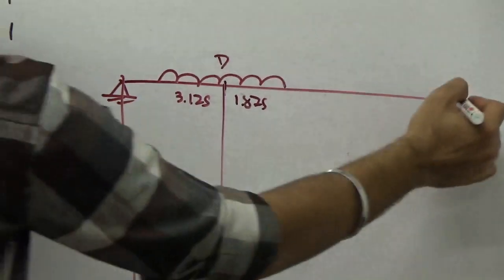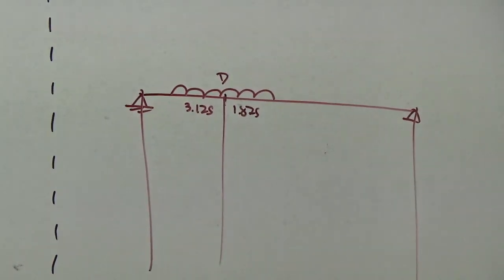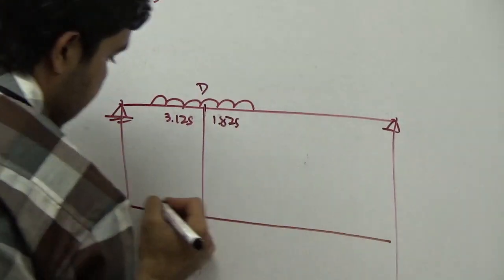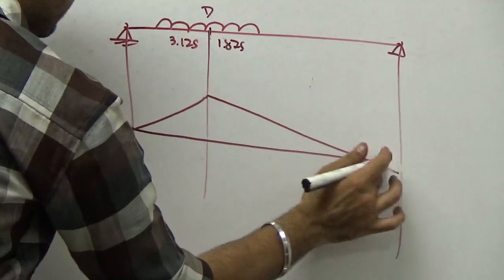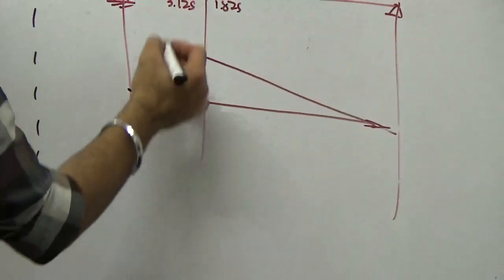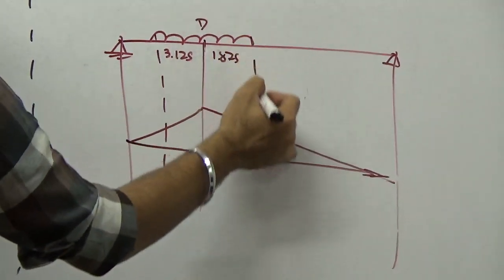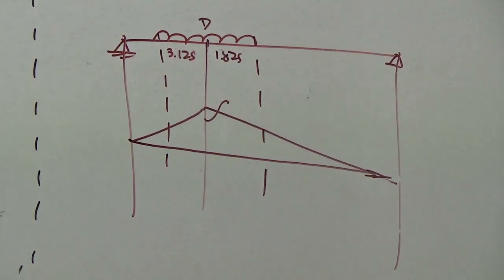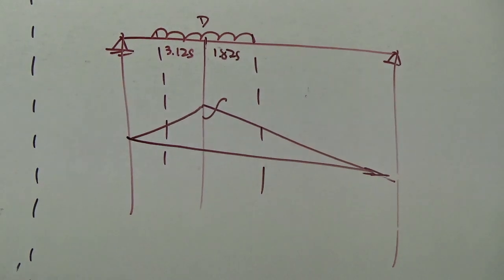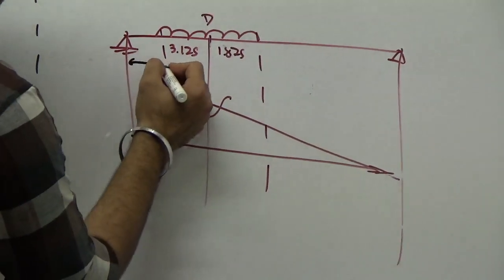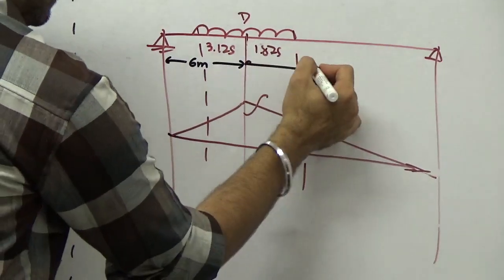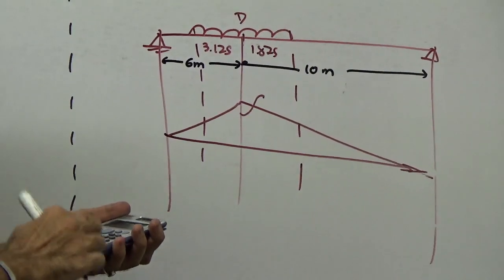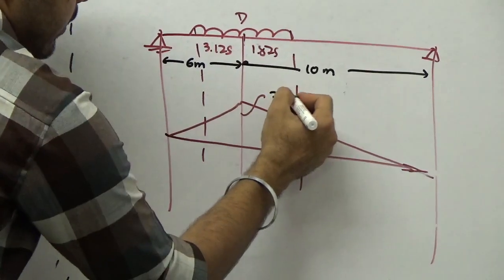Now use the ILD for bending moment at D. The peak ordinate at D is AB/L = (6 × 10)/16 = 3.75 m. We need to find the ordinates at both ends of the UDL using interpolation.